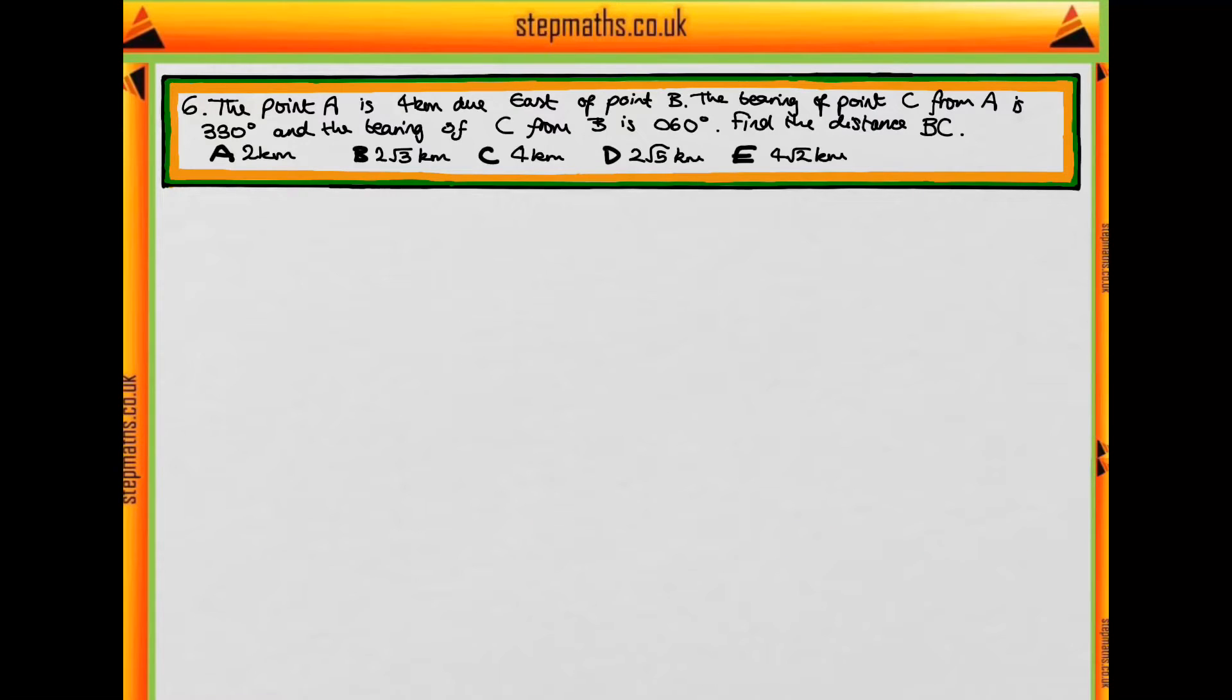This is question 6 of the Natural Sciences Admissions Assessment paper 2016, and this question is about bearing. We have a point A which is 4 kilometers due east of point B, and a point C which is at a bearing 330 degrees from A and 60 degrees from B, and we want to find the distance BC.